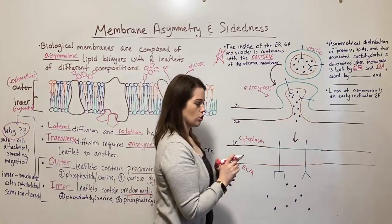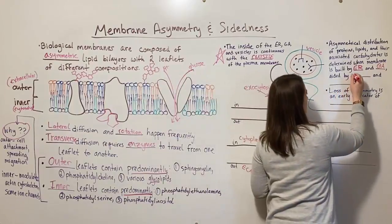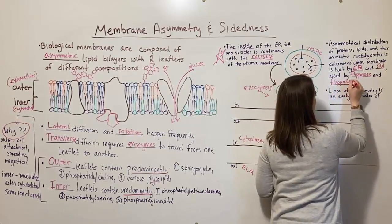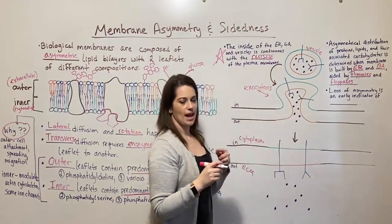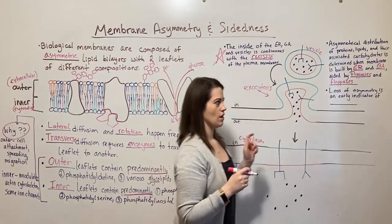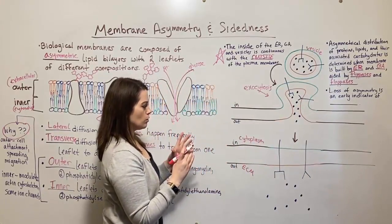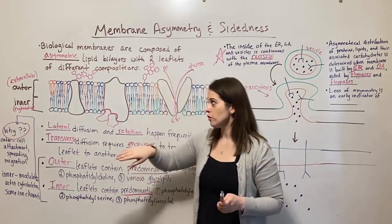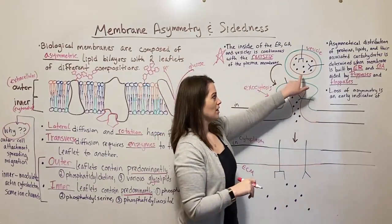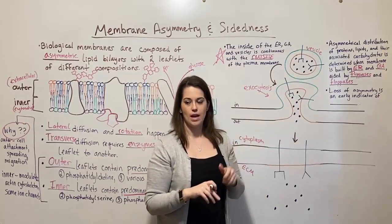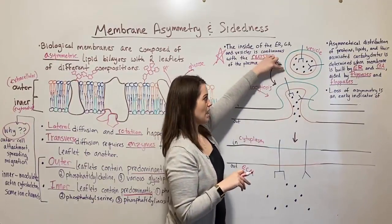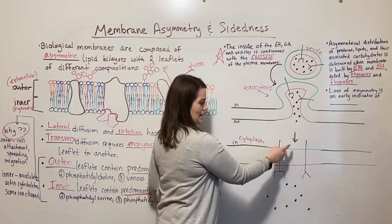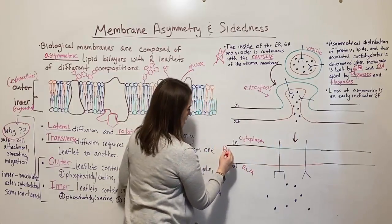The ER and Golgi are aided by two enzymes I've already mentioned: flippases and floppases. They are responsible for getting the right phospholipids into the outer versus the inner leaflet. In order for phospholipids to end up on the outer leaflet of the plasma membrane, flippases and floppases have to get them to the inner leaflet of a vesicle. To get them to the inner leaflet of the plasma membrane, they've got to get them to the outer leaflet of the vesicle — because the outside of the vesicle ends up becoming the inner leaflet of the plasma membrane.